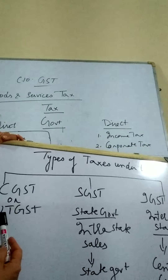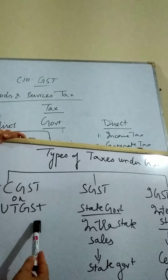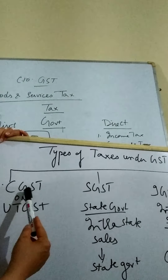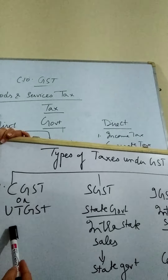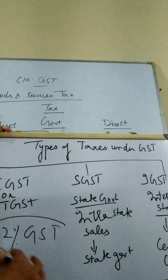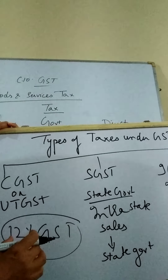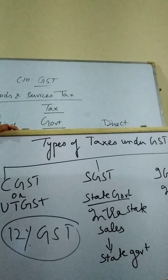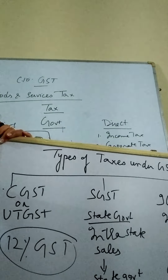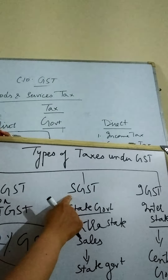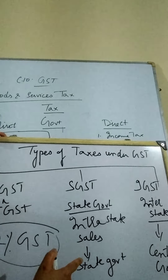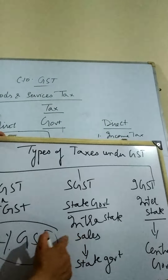GST has been divided into three major categories. One is CGST or UTGST. CGST means Central Government goods and services tax — charged by the Central Government, this tax goes directly to the Treasury of the Central Government. For example, if 12% GST is imposed on a commodity and it is an intrastate sale, then 6% goes to the Central Government as CGST and 6% goes to the State Government as SGST. Then we have SGST — State Government tax charged on commodities purchased or sold within the state.